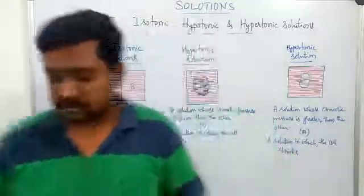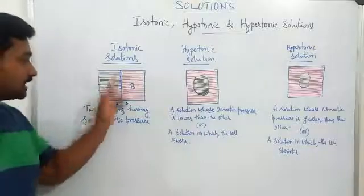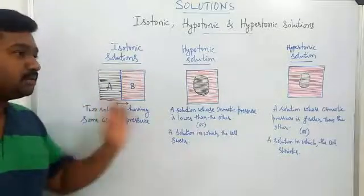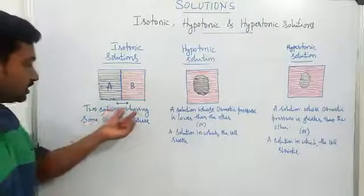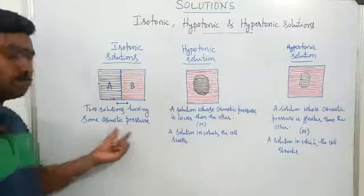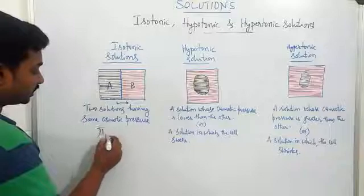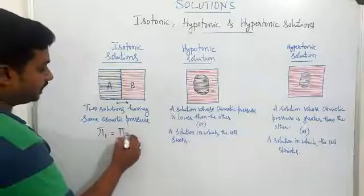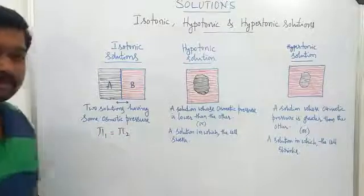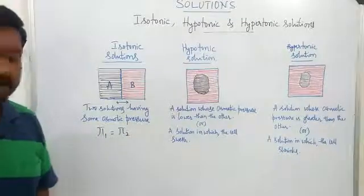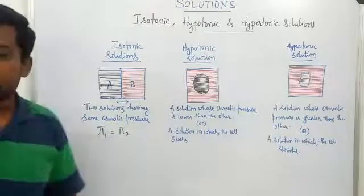Isotonic solutions are solutions which, even when separated by a semi-permeable membrane, show no movement between the two solutions. That is because the two solutions have the same osmotic pressure. Whenever two solutions have the same osmotic pressure — that is, π₁ equals π₂ — there is no osmosis, even with a semi-permeable membrane. Such solutions are called isotonic solutions.